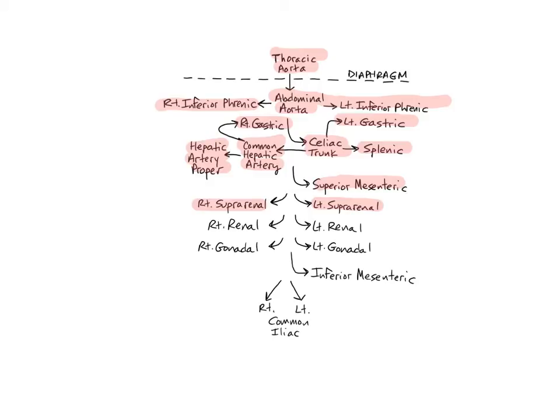The paired right and left renal arteries branch off the sides of the abdominal aorta near L2, about one centimeter below the superior mesenteric artery. They go on to supply all the tissues of the kidneys.